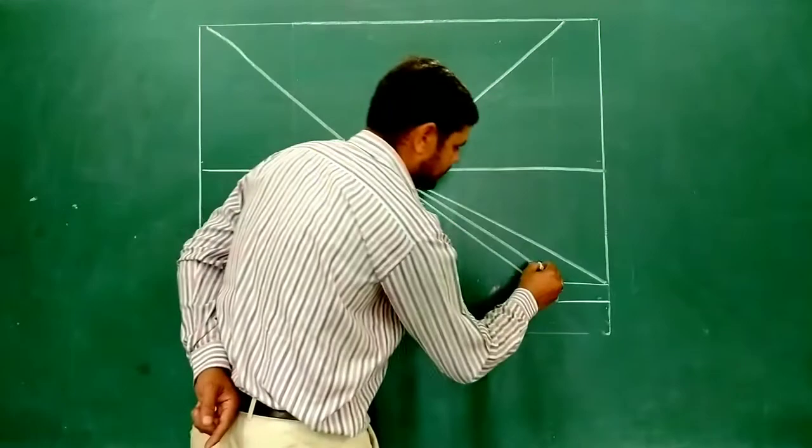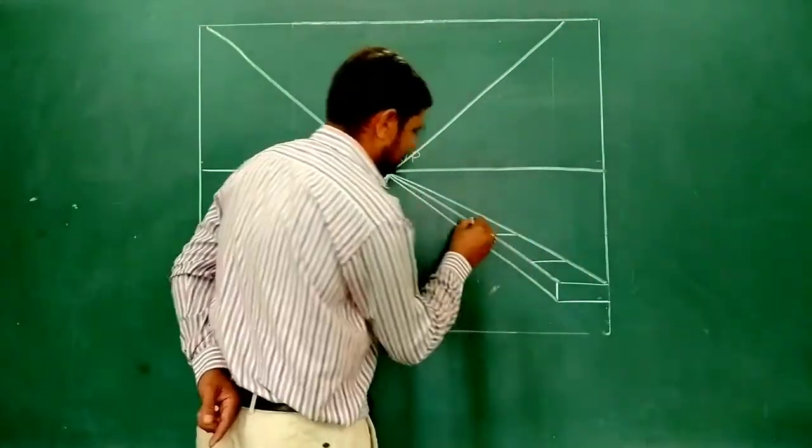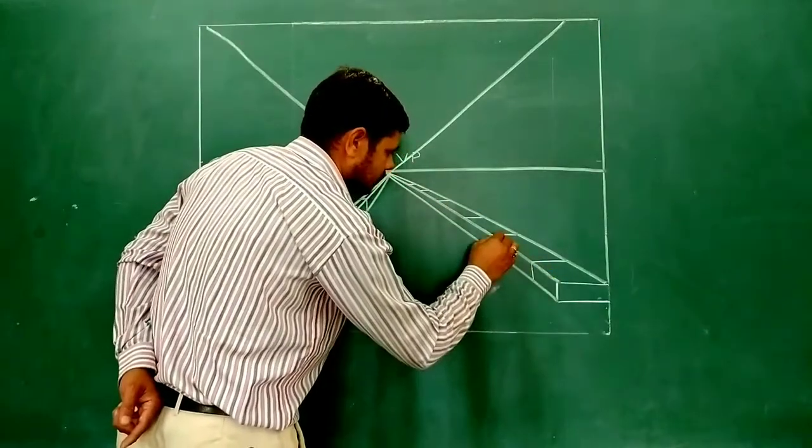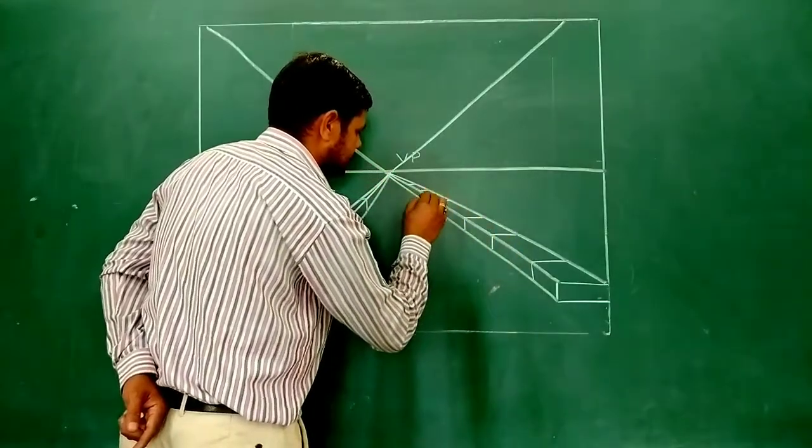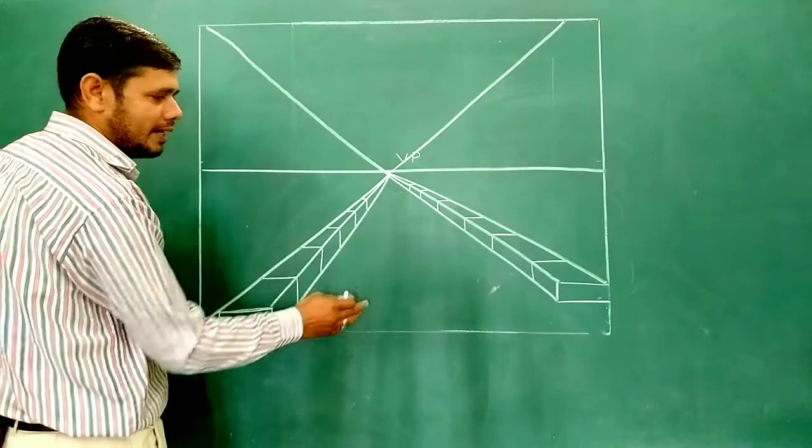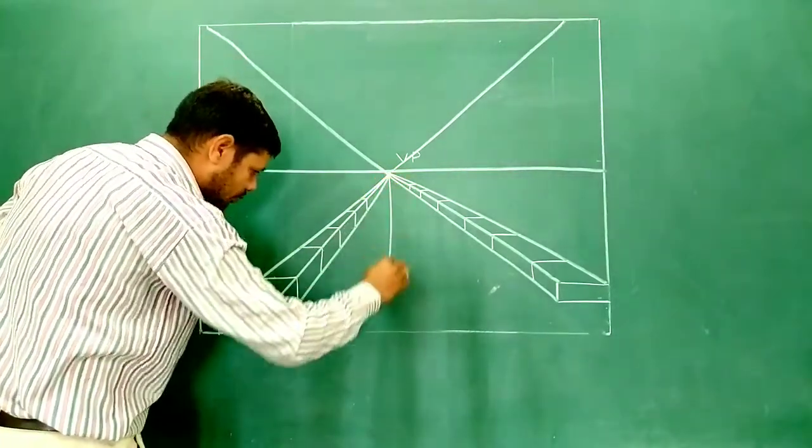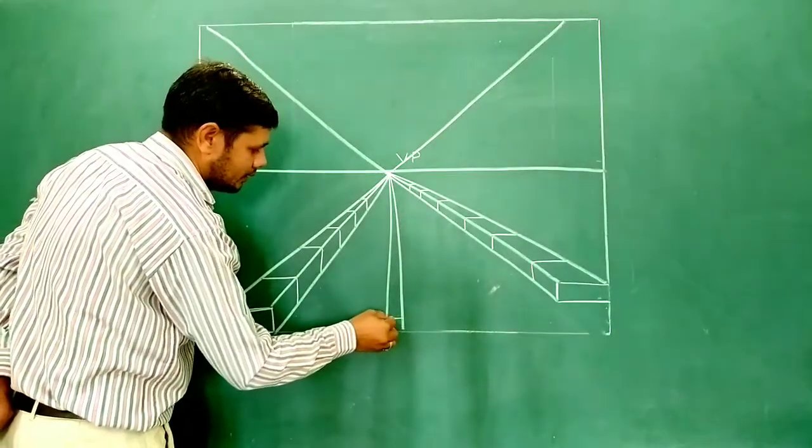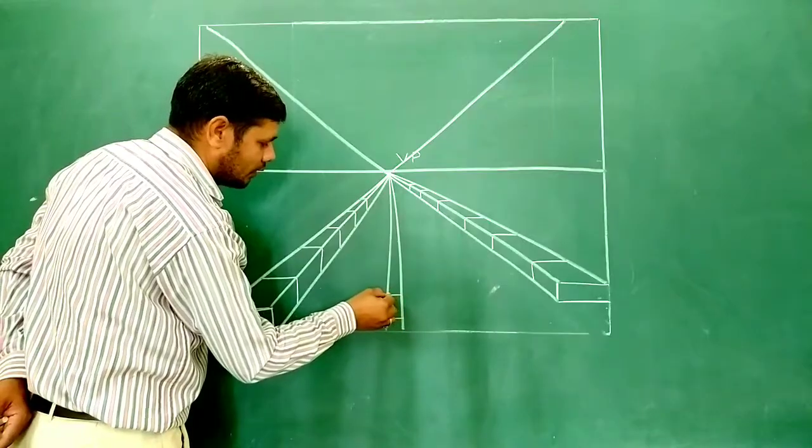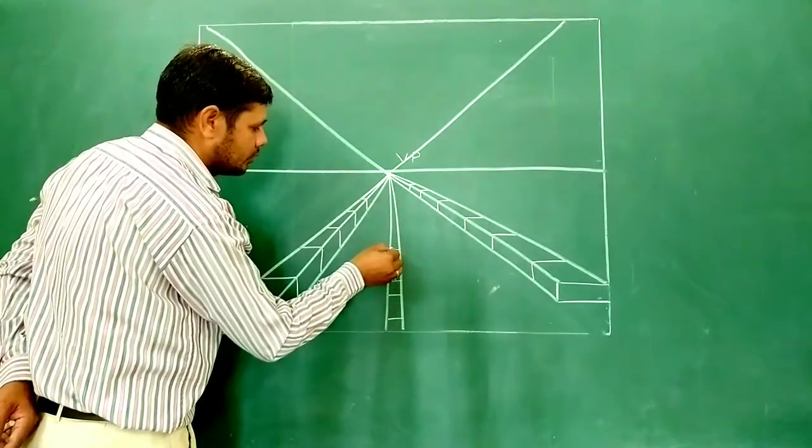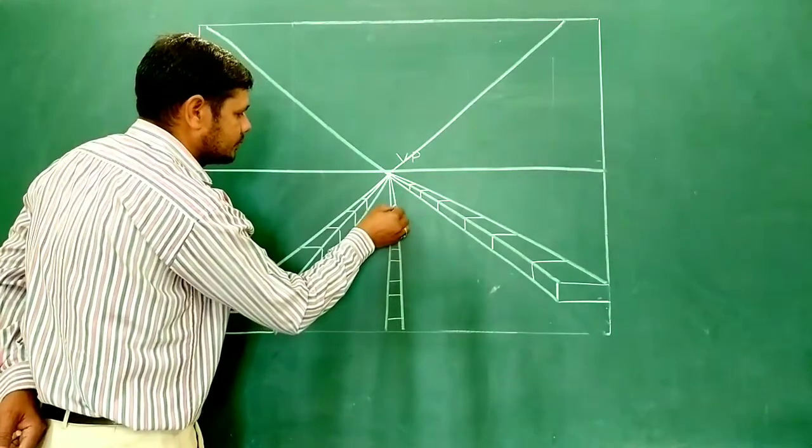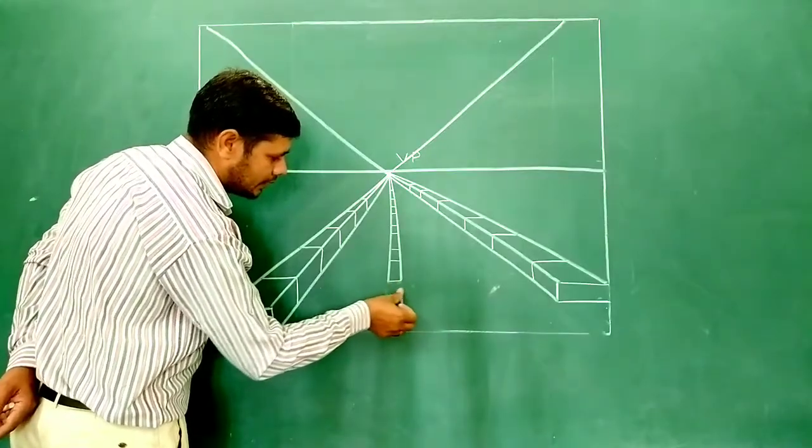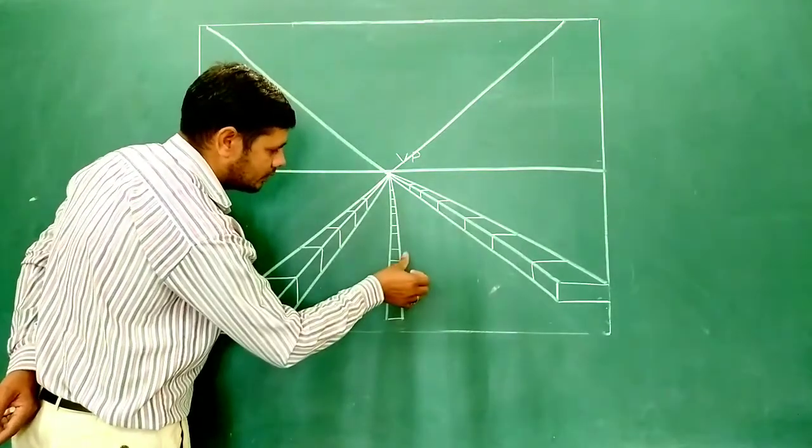And then now we make a dividing line. First we make one line, and then one more line parallel to this line. And then one small, and then one big. Small and then big, small, big, small, big, small like this. And then one small part. We place it, this is divided into four parts.